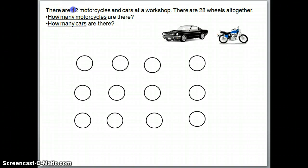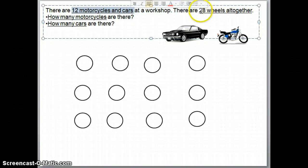Now, if you have 12 motorcycles and cars, they say that there are 28 wheels altogether, same as the previous question. First, we need to identify the total number of items, that is 12 motorcycles and cars. We draw 12 circles.